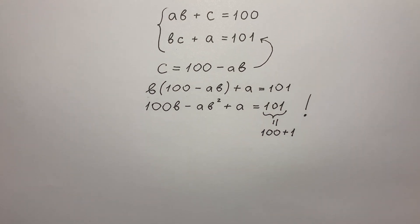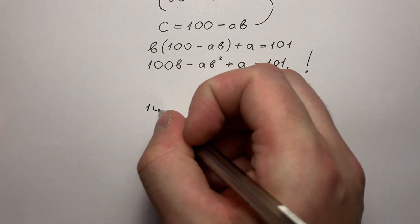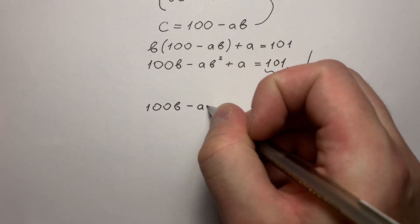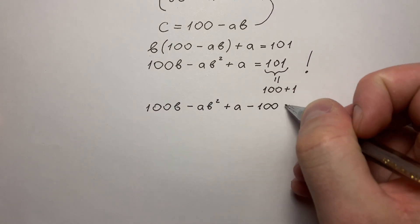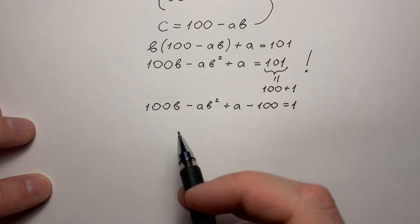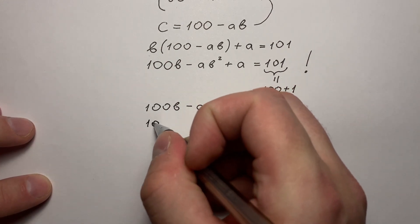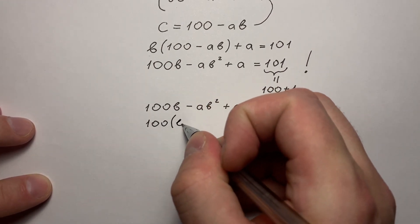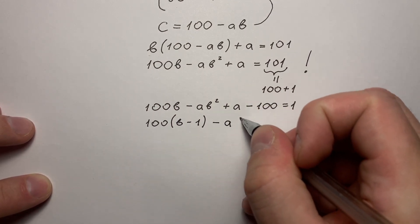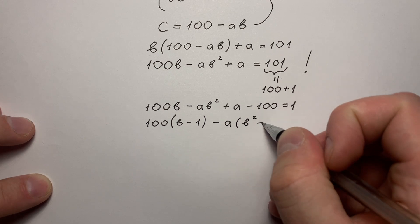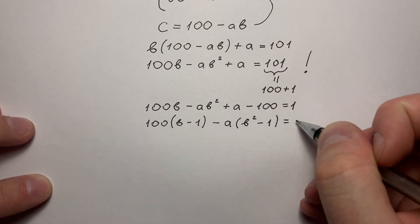So our equation we can write like 100B minus AB squared plus A minus 100 and it equals 1. Or we can write it like 100 times B minus 1 minus A times B squared minus 1 and it equals 1.